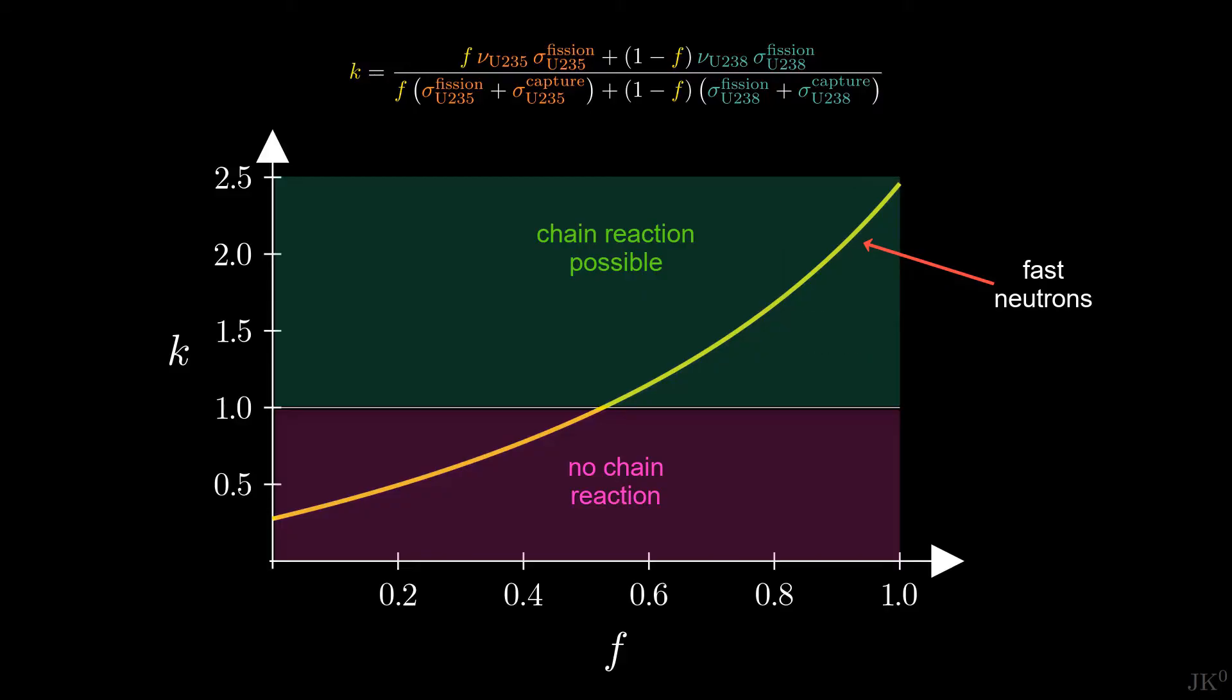A crucial result found in this plot is that for natural uranium, K equals 0.28. This means that a self-sustaining nuclear chain reaction using fast neutrons in natural uranium or even in low enriched uranium, which is used in nuclear reactors, is physically impossible.